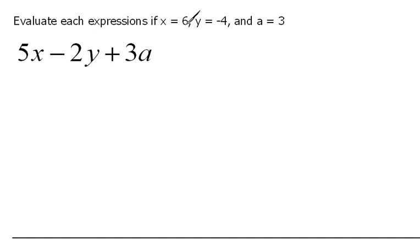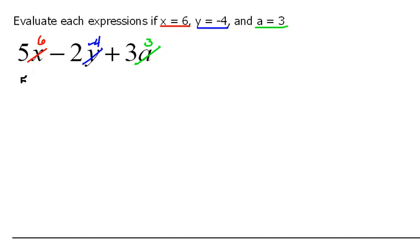If x is 6, that means I'm going to be replacing the x's with 6. It says if y is negative 4, so in place of y I'm going to be putting negative 4. And it says a is 3, so in place of a we're going to be plugging in a 3. I'm going to recopy the problem — so this would be 5, but instead of x, we're going to plug in a 6.